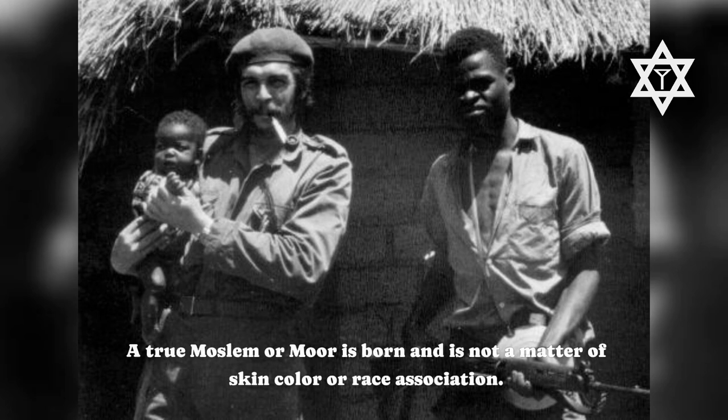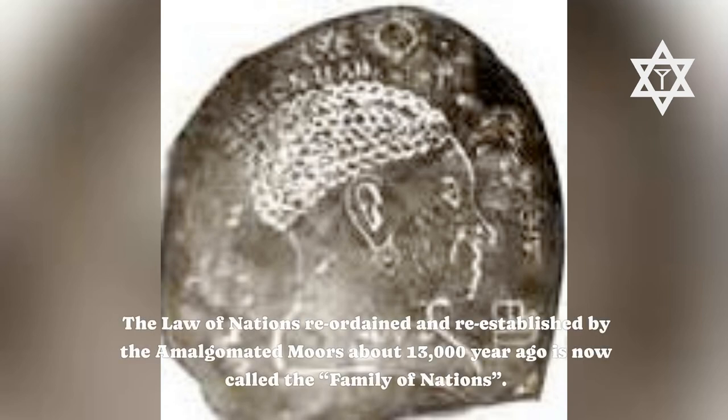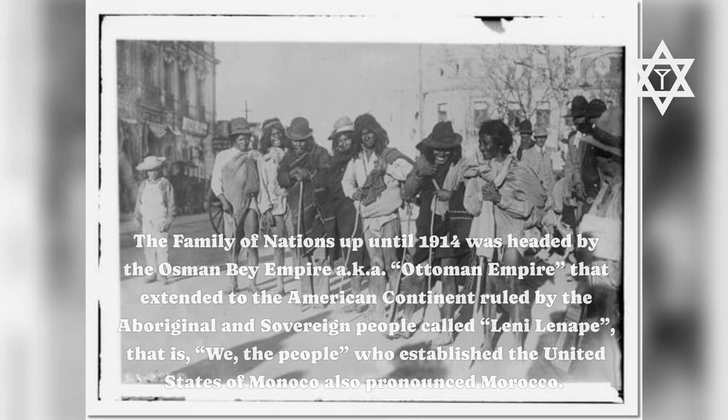The law of nations, reordained and re-established by the amalgamated Moors about 13,000 years ago, is now called the family of nations. The family of nations, up until 1914, was headed by the Osman Bey Empire, aka Ottoman Empire, that extended to the American continent, ruled by the aboriginal and sovereign people called Leni Lenape — that is, we the people — who established the United States of Monaco, also pronounced Morocco.